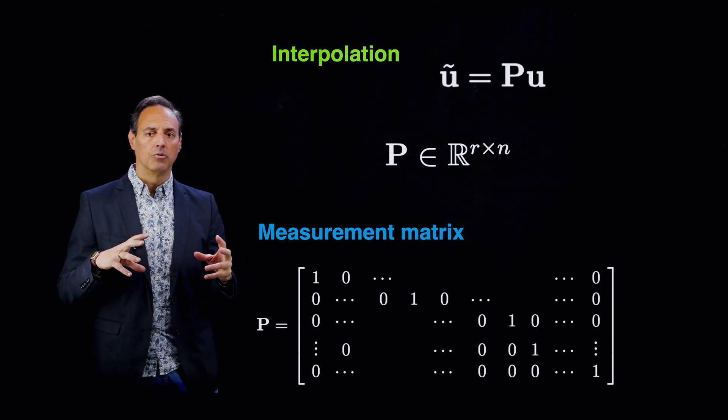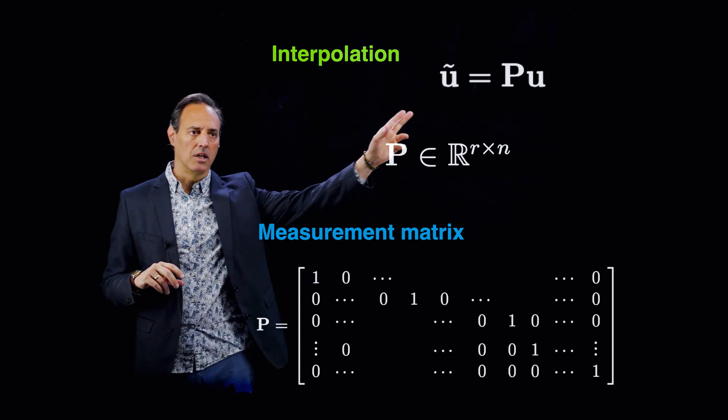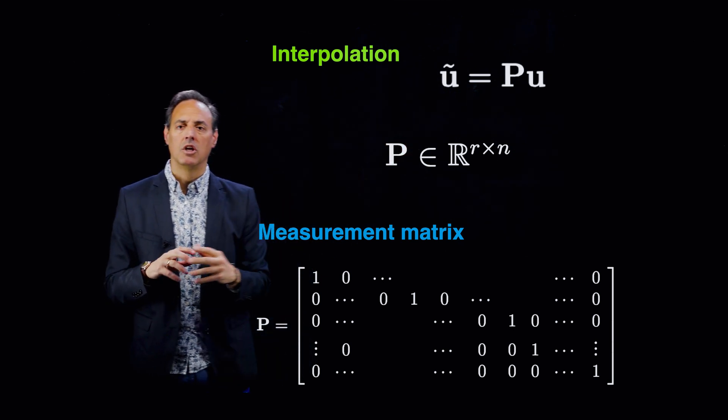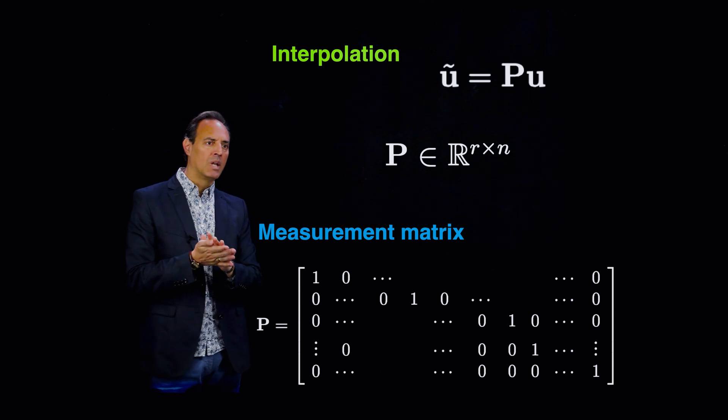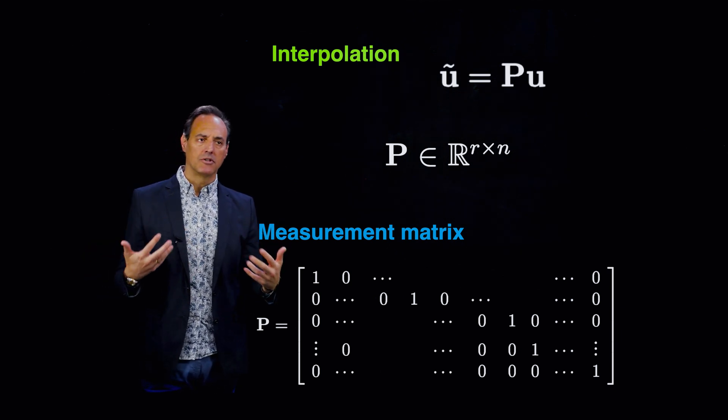That's what we're going to use as our major matrix template for multiplication to take you from the high dimensional state space to the low dimensional state space. The question was about how do we determine P—how do we determine these sensor locations?